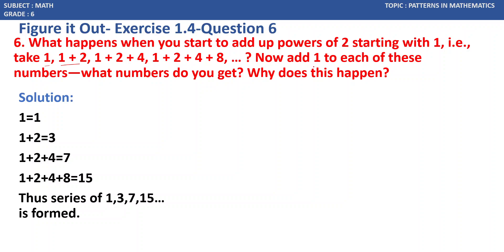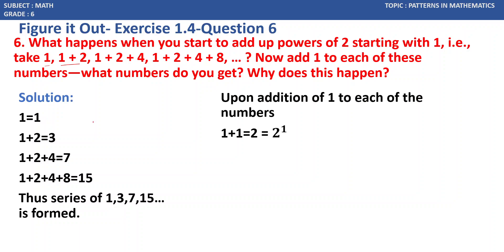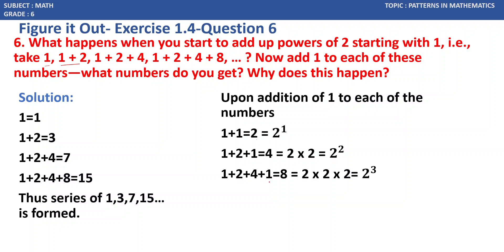Now we add 1 to each of these numbers. Adding 1 to 1 gives 2, which is 2 power 1. Adding 1 to 3 gives 4, which is 2 squared. Adding 1 to 7 gives 8, which is 2 cubed — that is 2 into 2 into 2. So adding 1 to each sum gives us powers of 2.